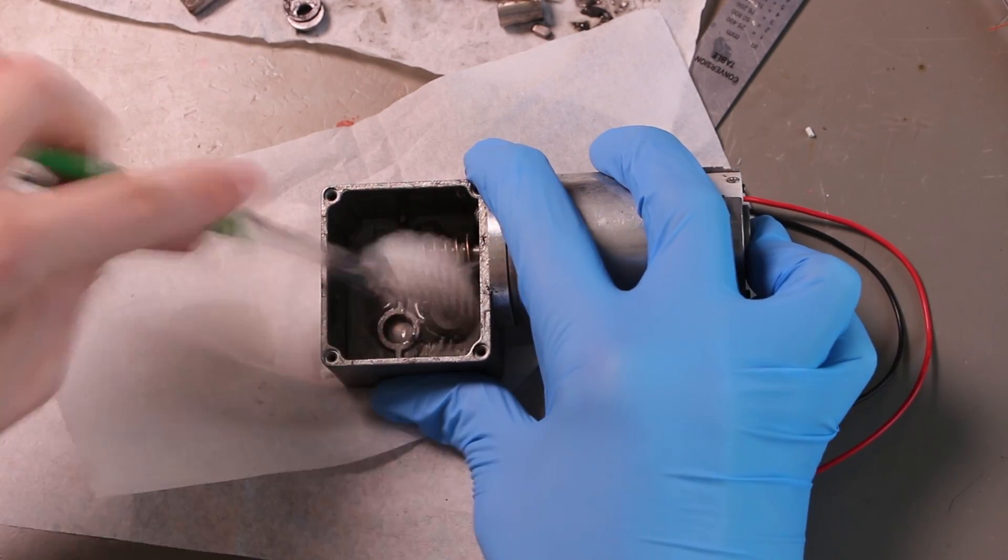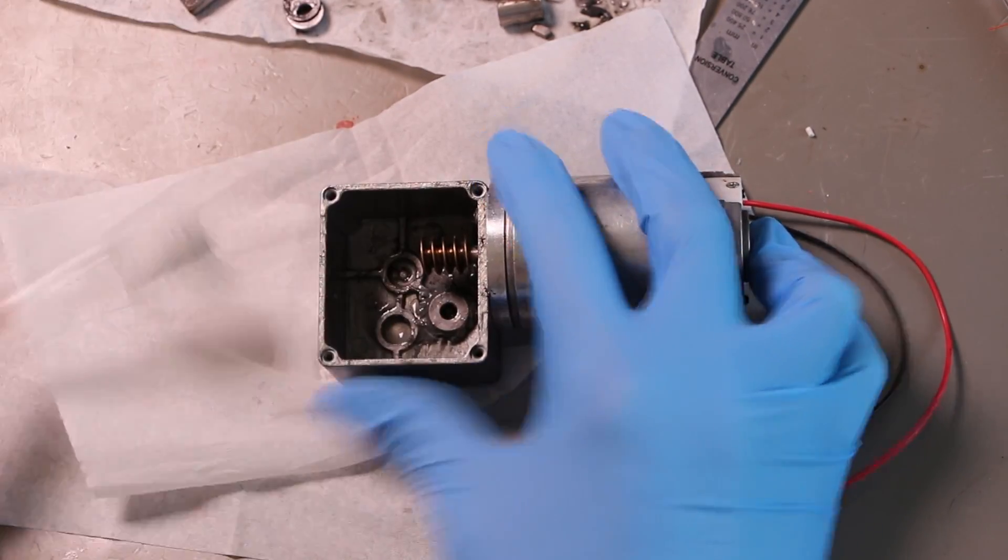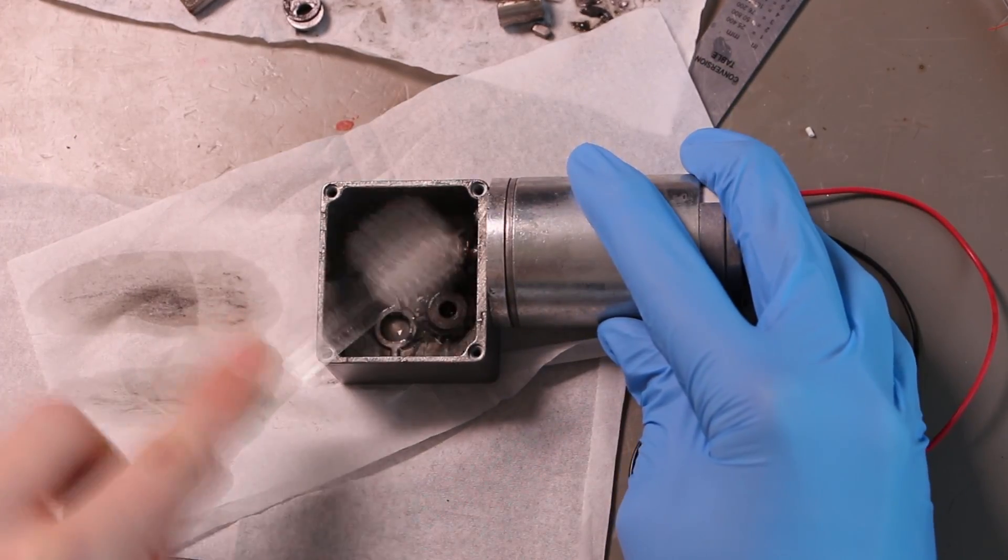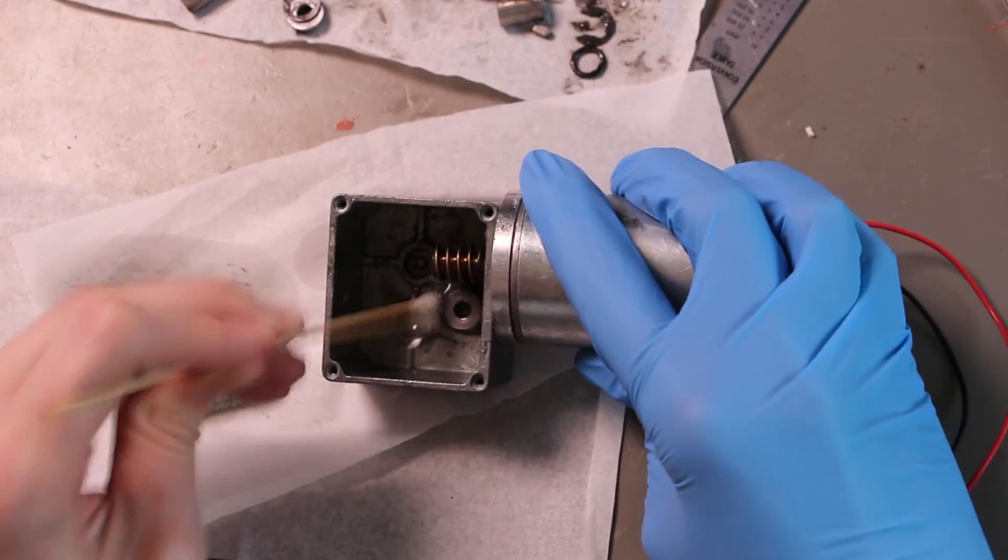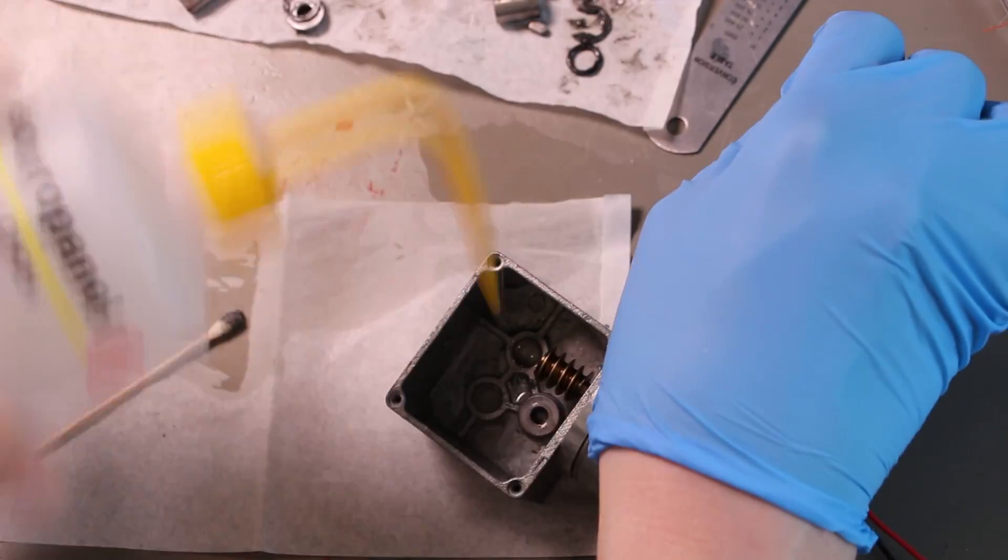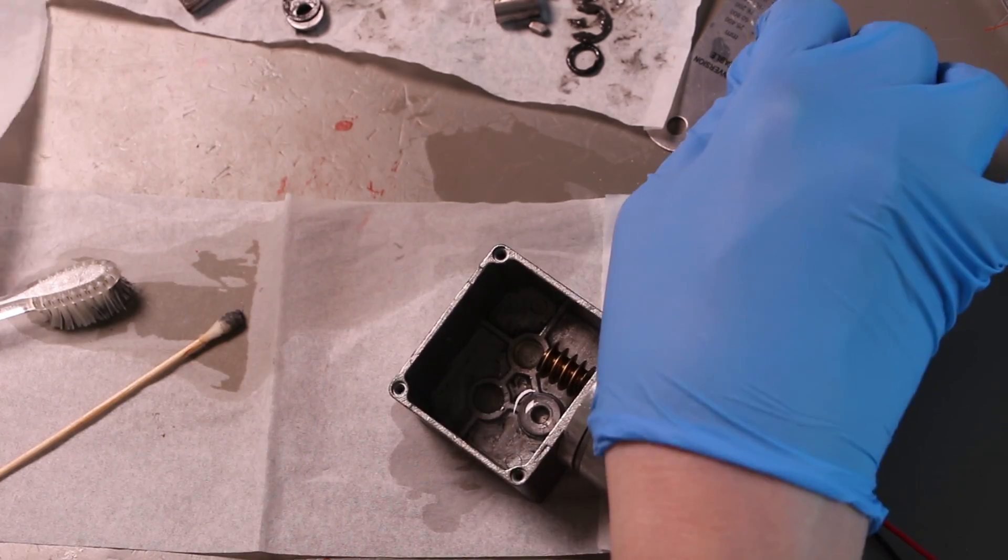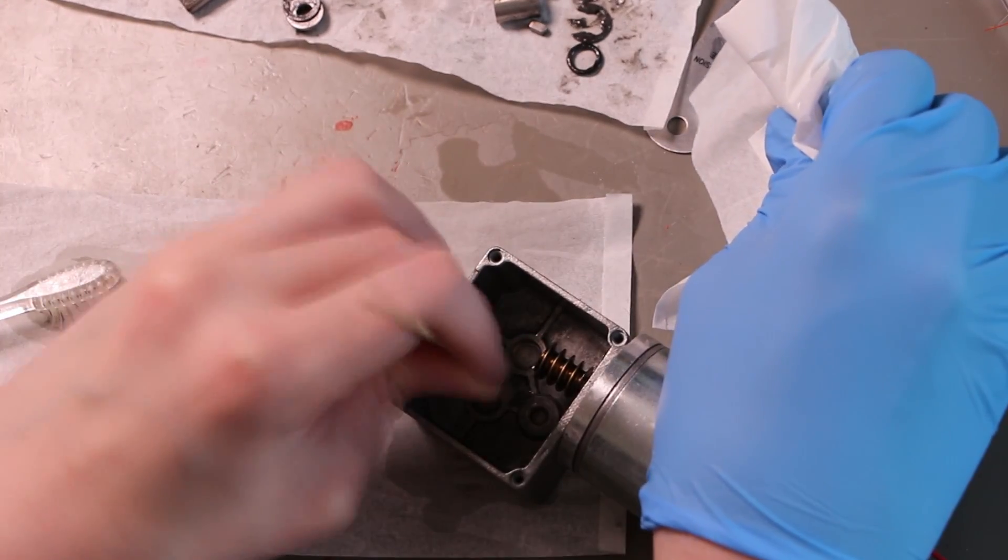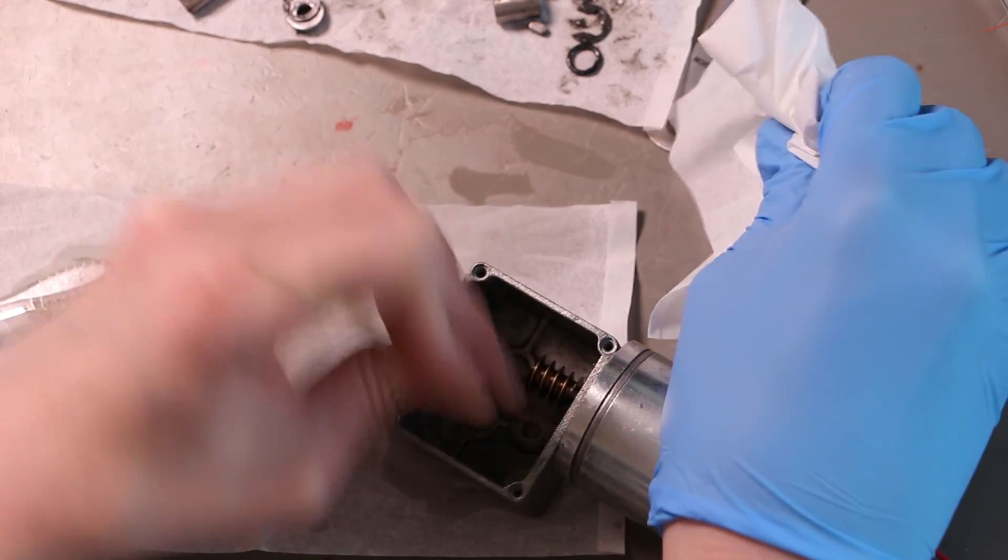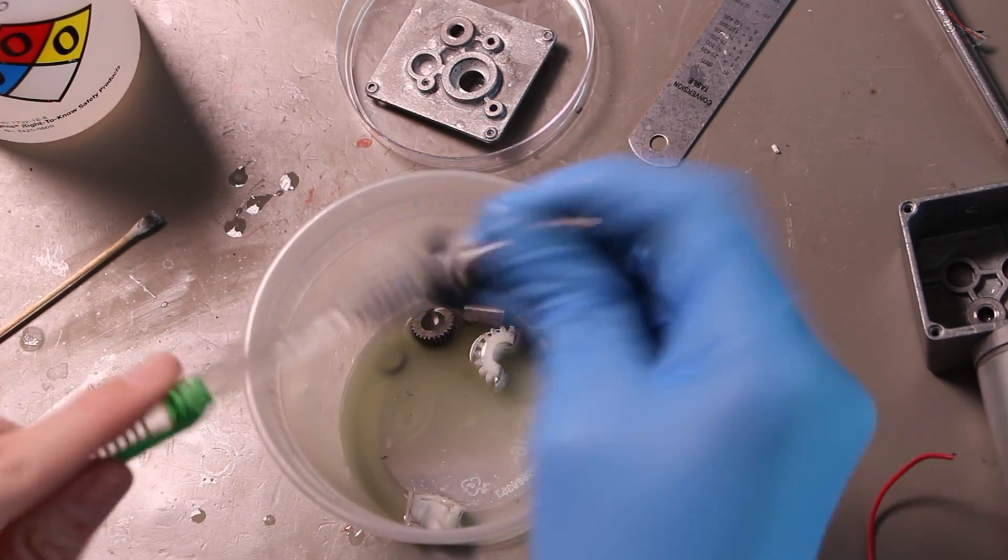So I'm not sure why they would be using a single plastic gear in a gearbox that otherwise is made of metal gears. The only thing I can come up with is that they needed a helical gear in order to mesh with the worm gear in this assembly, and it might have just been too expensive to machine a helical gear, so they used an injection molded plastic part.